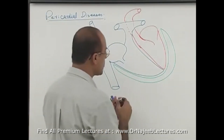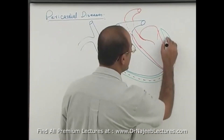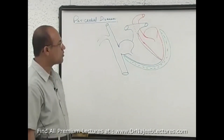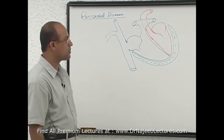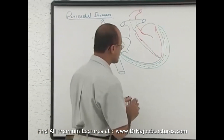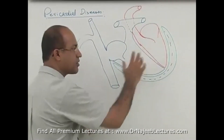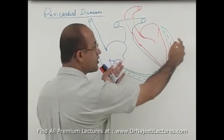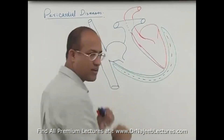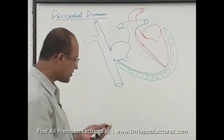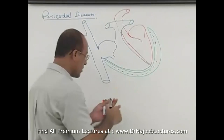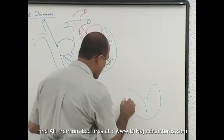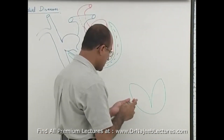Now, if there is so much pericardial effusion — too much fluid collected into the pericardial sac — and a larger amount of fluid accumulates into the pericardium, it compresses the heart, especially the atria and ventricles during diastole. During diastole, the ventricles should relax so that they can fill, but with excessive pericardial fluid, this is compromised.